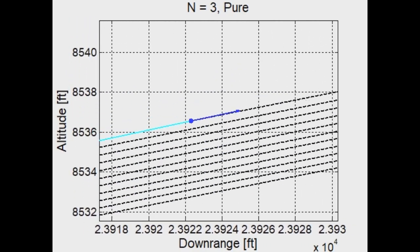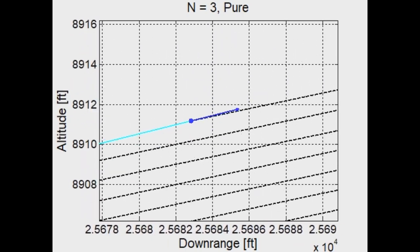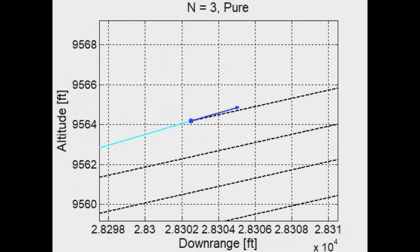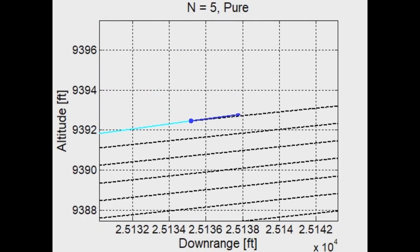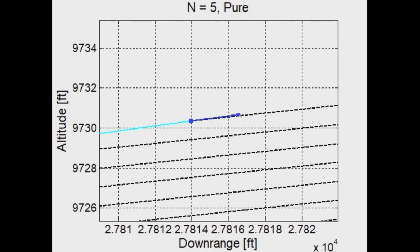But note that compared to N equals 2, much less movement in the range vectors, much shallower lead angle, and much less change in lead angle over the final moments of the engagement. And for N equals 5, we see virtually no change.